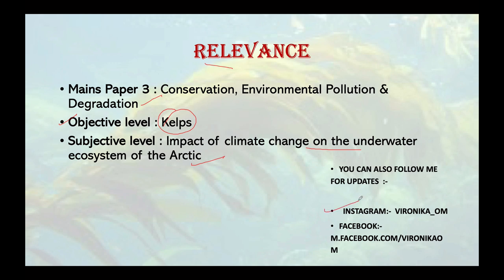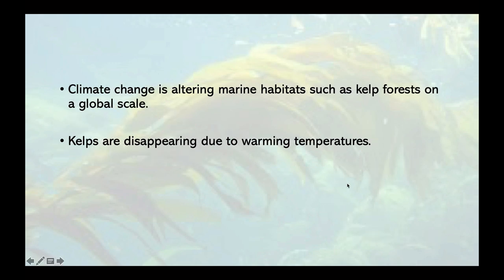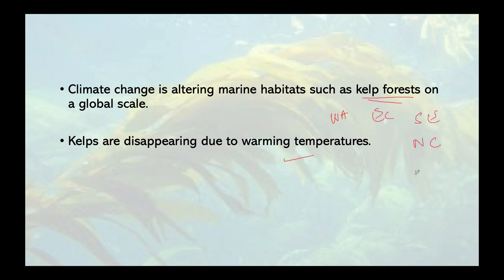Climate change is altering marine habitats such as the kelp forest on a global scale. We are watching a change because of climate change in the kelp forest — these are the underwater, marine forests. Kelps are disappearing due to warming temperatures, especially in western Australia, eastern Canada, southern Europe, northern California, and the eastern US. The temperature in these regions is rising as fast as it has ever been.